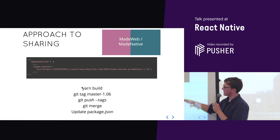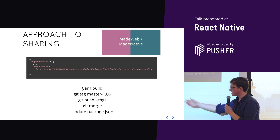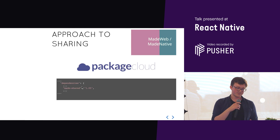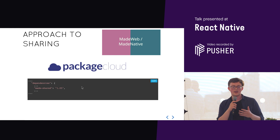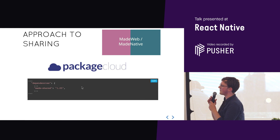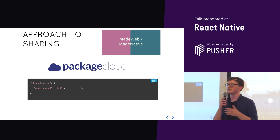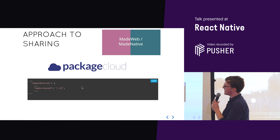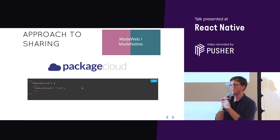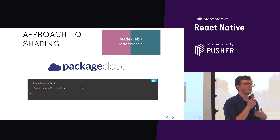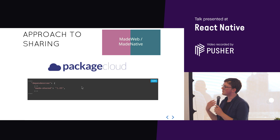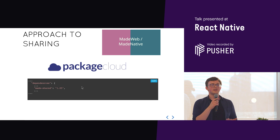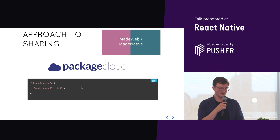The workflow required us to Yarn build, release a tag, push the tag, merge, and update the package JSON in native and web. We moved to a private versioning tool called Package Cloud. We could have used NPM's private repositories, but made.com already had Package Cloud as a provider. This gave us a much more normal package JSON with normal versioning, pushed developers toward semantic versioning, and moved our releasing into a CI pipeline.